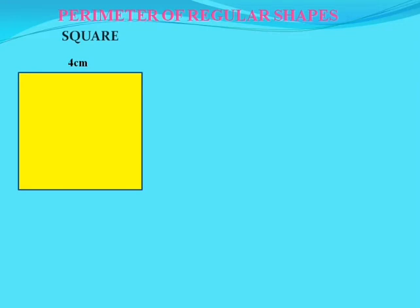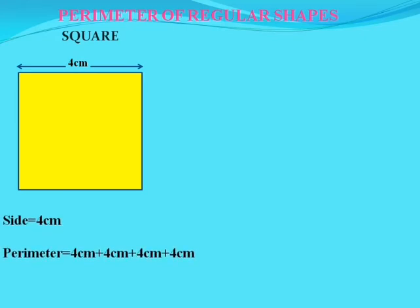Now we are going to find out the perimeter of regular shapes. Take a square which does not have smaller squares in it, but its side is 4 cm. The side of this square is given as 4 cm, so we can find the perimeter: 4 cm + 4 cm + 4 cm + 4 cm — the sum of all sides — which becomes 16 cm.